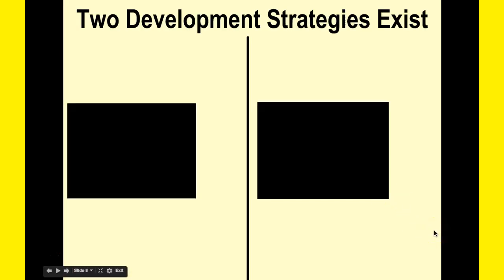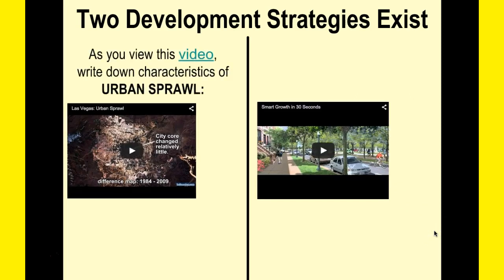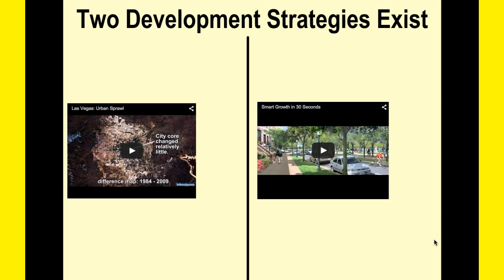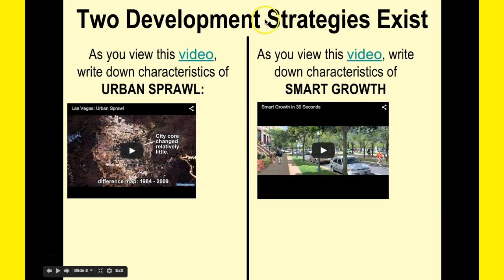The main concepts we're looking at today are urban sprawl and smart growth. We're going to watch two introductory videos. As you watch each one, focus on the main characteristics of each development strategy — these are ways that governments can allow or not allow businesses and home developments to be created.